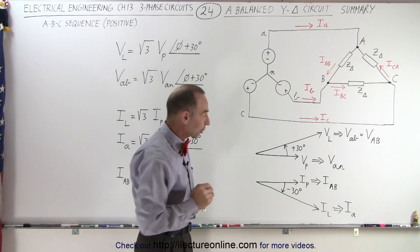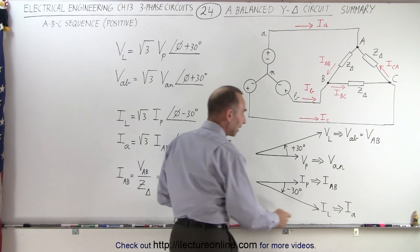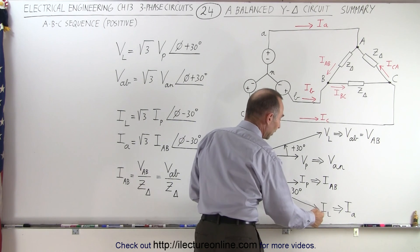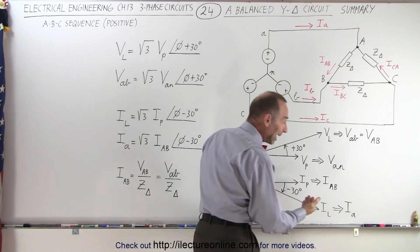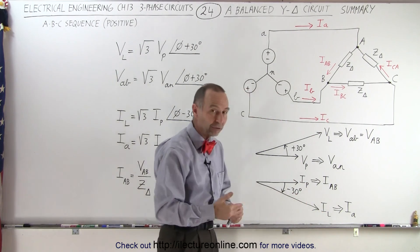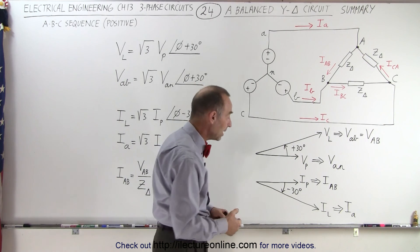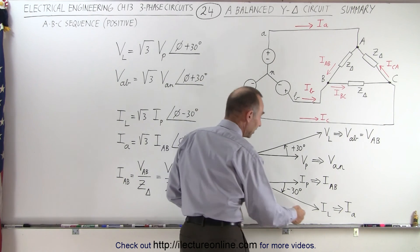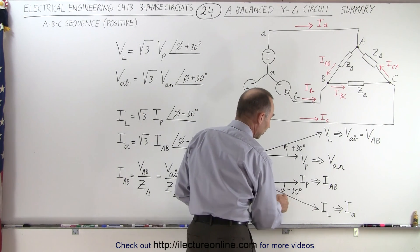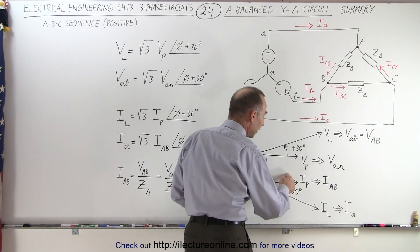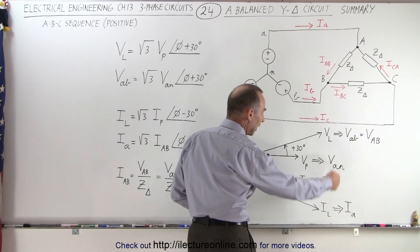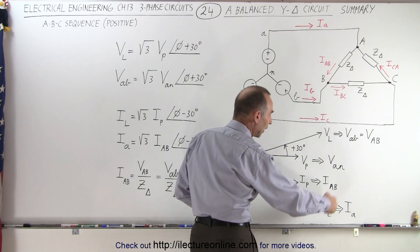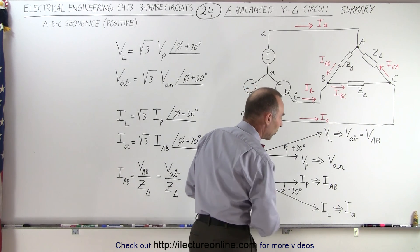When we deal with the currents, we can see that the line current is larger than the phase current, again by a factor of the square root of 3, and the line current lags the phase current by 30 degrees. This is a handy diagram to try and memorize.